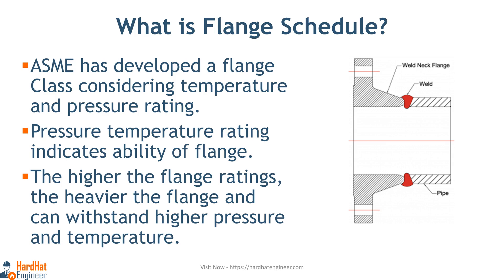Flange schedules are denoted by numbers such as 20, 40, 60, 80, 100, 120, 140, 160, as well as STD (standard), XS (extra strong), and XXS (double extra strong). To summarize, the flange class indicates the pressure-temperature rating of the flange, while flange schedule tells us about the wall thickness of the pipe.